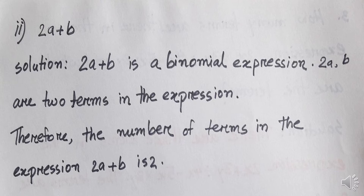Number 2: 2a plus b. Solution: 2a plus b is a binomial expression. A binomial expression is one that has two terms — 'bi' means 2. The two terms are 2a and b. Therefore, the number of terms in the expression 2a plus b is 2, and this is a binomial expression.